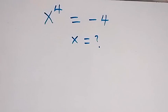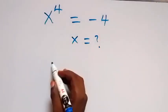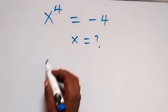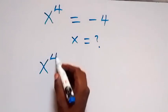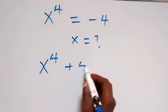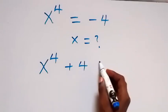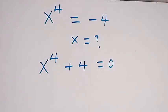We have x raised to the power 4 equals minus 4. Let's take minus 4 to the other side, so we have x raised to the power 4 plus 4 equals 0.